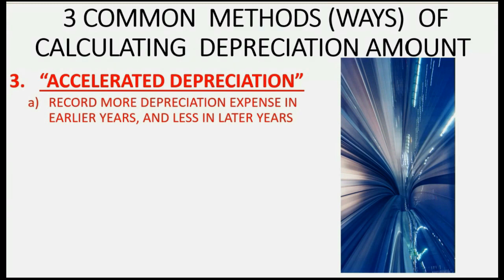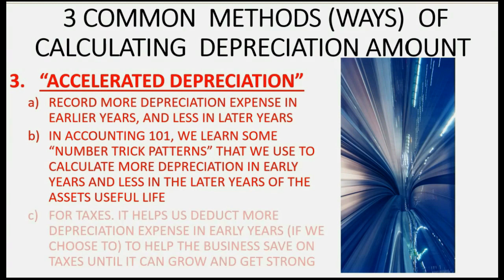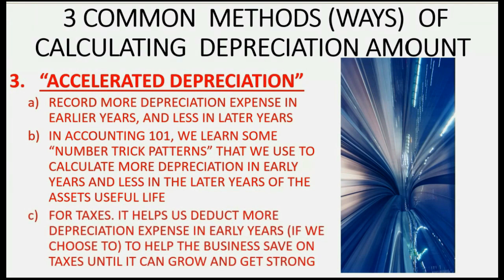The third method is accelerated depreciation — you record more depreciation expense in the early years of the asset and less in the later years. In Accounting 101, we learn number trick patterns to calculate more depreciation in early years and less in later years. For taxes, this helps deduct more depreciation expense early, helping the business save on taxes while it grows and gets strong.